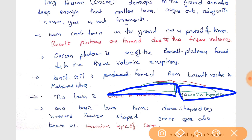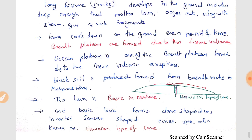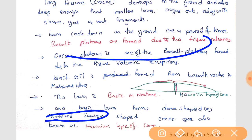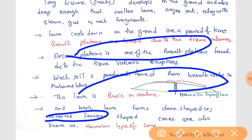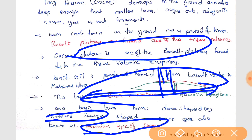The Hawaiian type cone is very flat, with very little height but a very large area. In other words, the cone is in the shape of an inverted saucer — broad and flat. This type is called the Hawaiian type of cone.